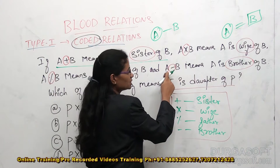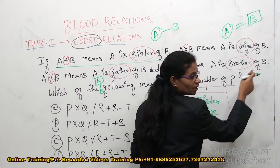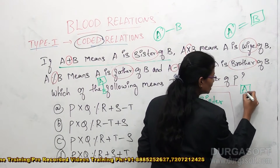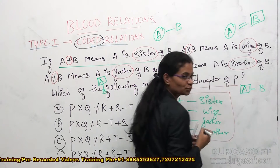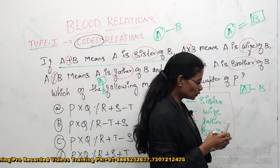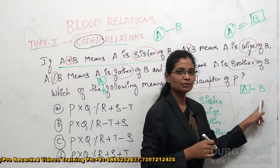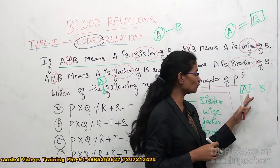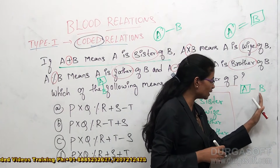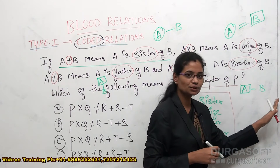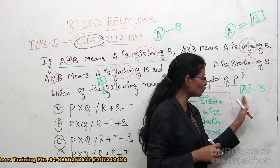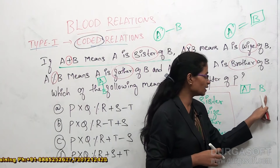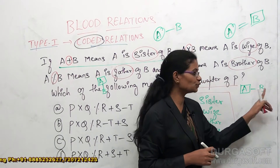Wherever I get minus A minus B, it means A is brother of B. That means A will be a male person and he is becoming a brother to B. I don't know what is the gender of B — it may be male or female. So here I know only A's gender: A is a male person and he is becoming a brother to B.